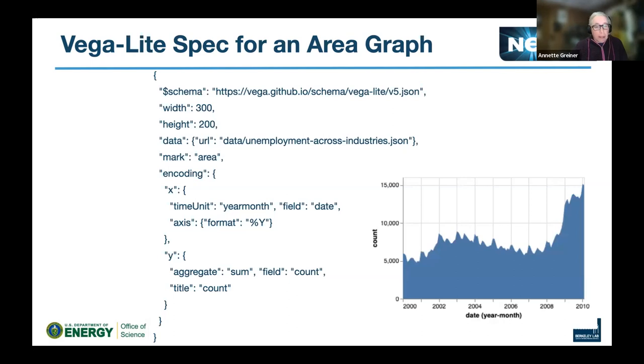So Vega-Lite is kind of a way of taking that and saying, well, let's do something a little higher level. Let's make it so that you can fit the code for a simple area chart in letters that you can read in just one column here. Much smaller, much simpler.